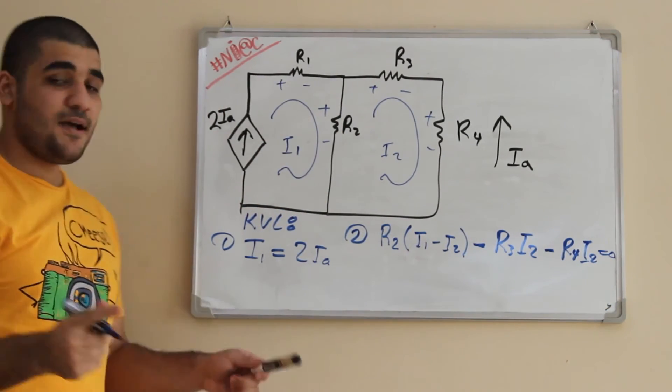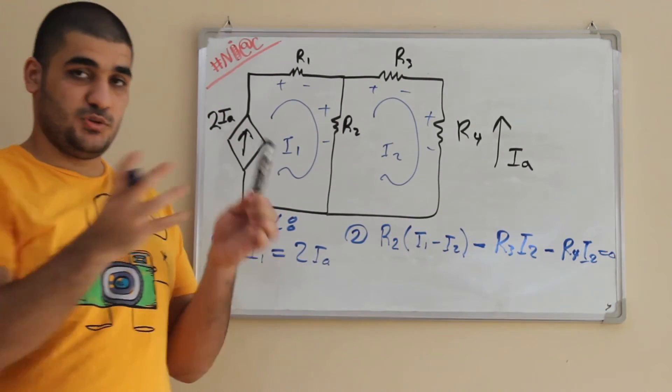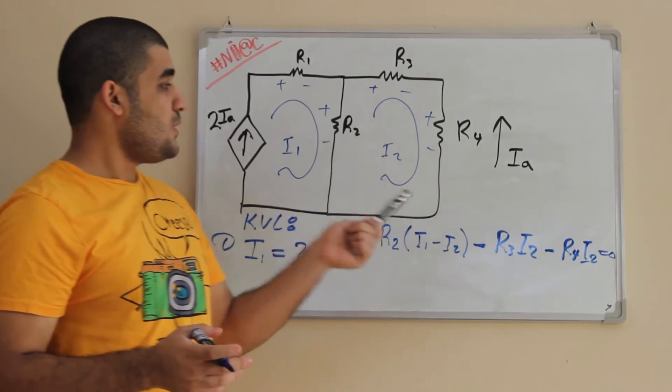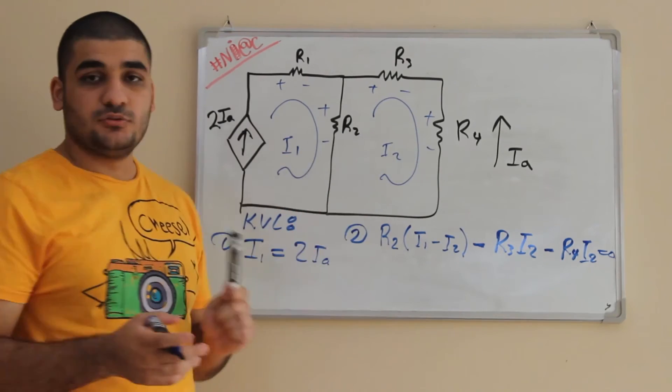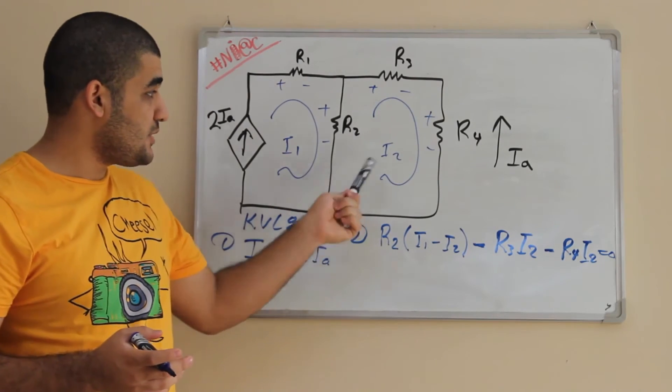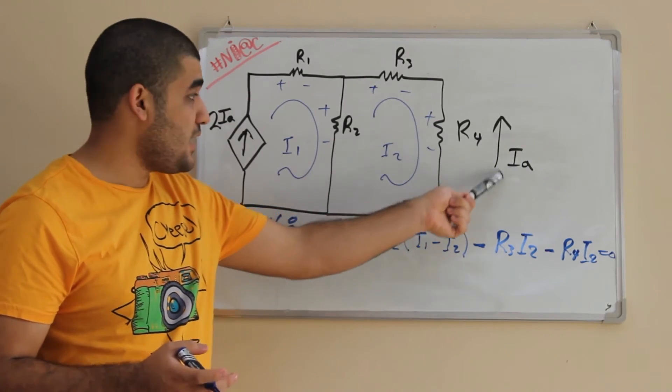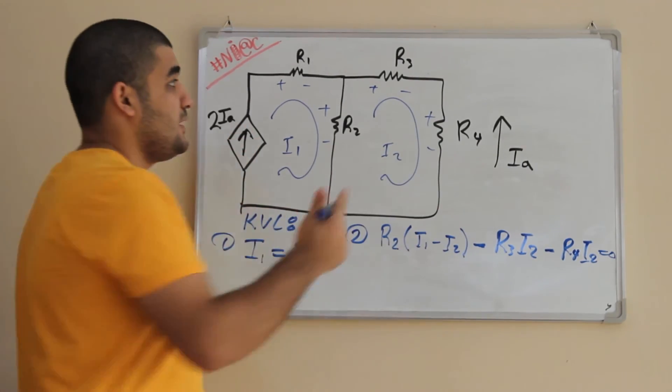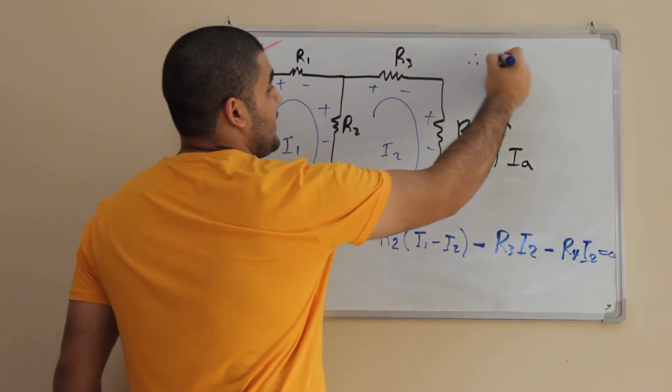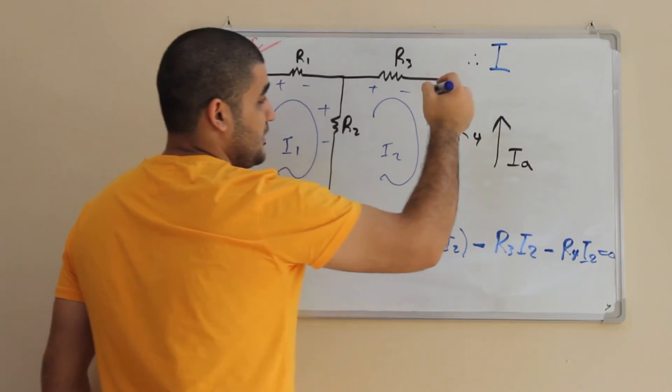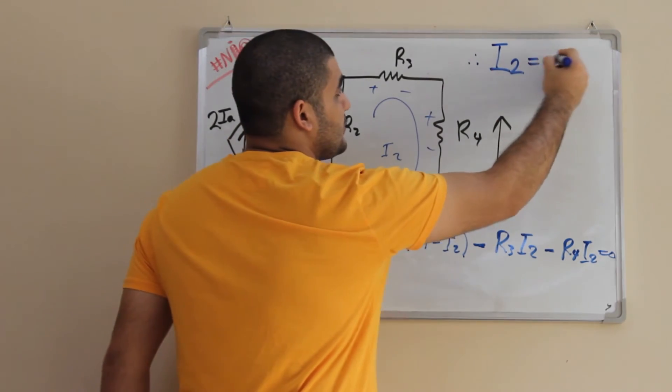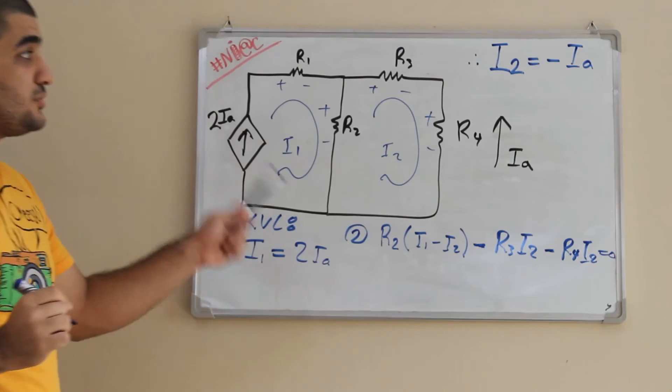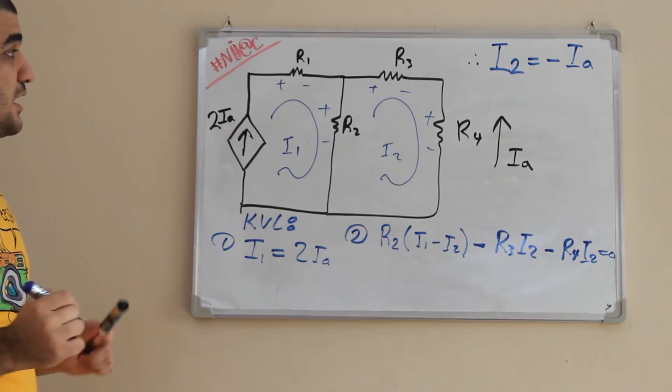Now we have to find some relation between these two equations. Now what is the value of I2? For I2, you can see that here there's an IA. IA is in opposite direction to I2. So from this information, I can find that, I can figure that I2 is equal to minus IA.